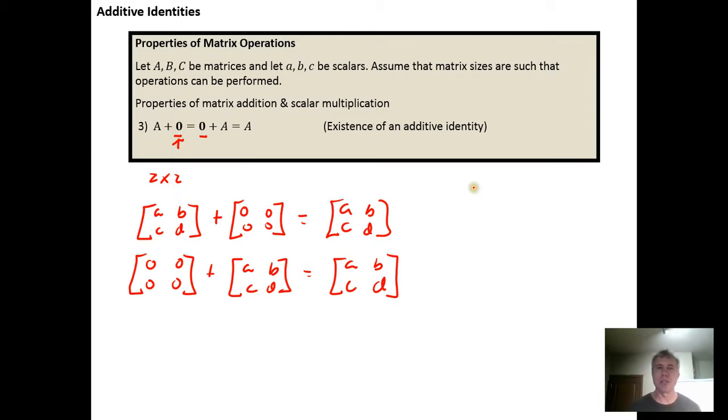We would usually denote this with a zero and subscript it with the size. So if I write 0 sub 2×2, I'm telling you that I have the 2×2 matrix that contains all zeros. If we were typing, we would make this zero bold so that it stands out.